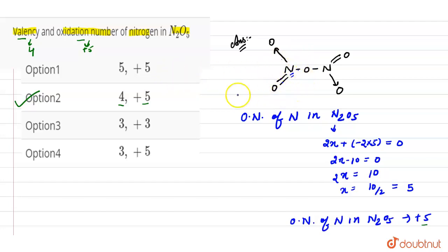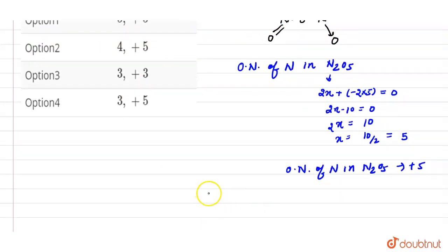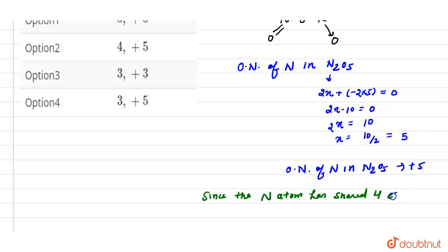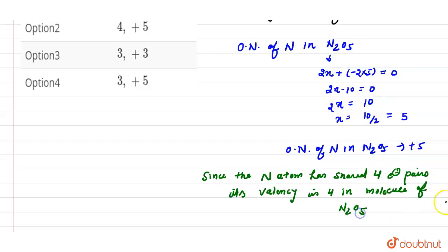So the valency, or covalency, of nitrogen in N₂O₅ is four. The nitrogen atom has shared four electron pairs, so its valency is four in the molecule of N₂O₅.